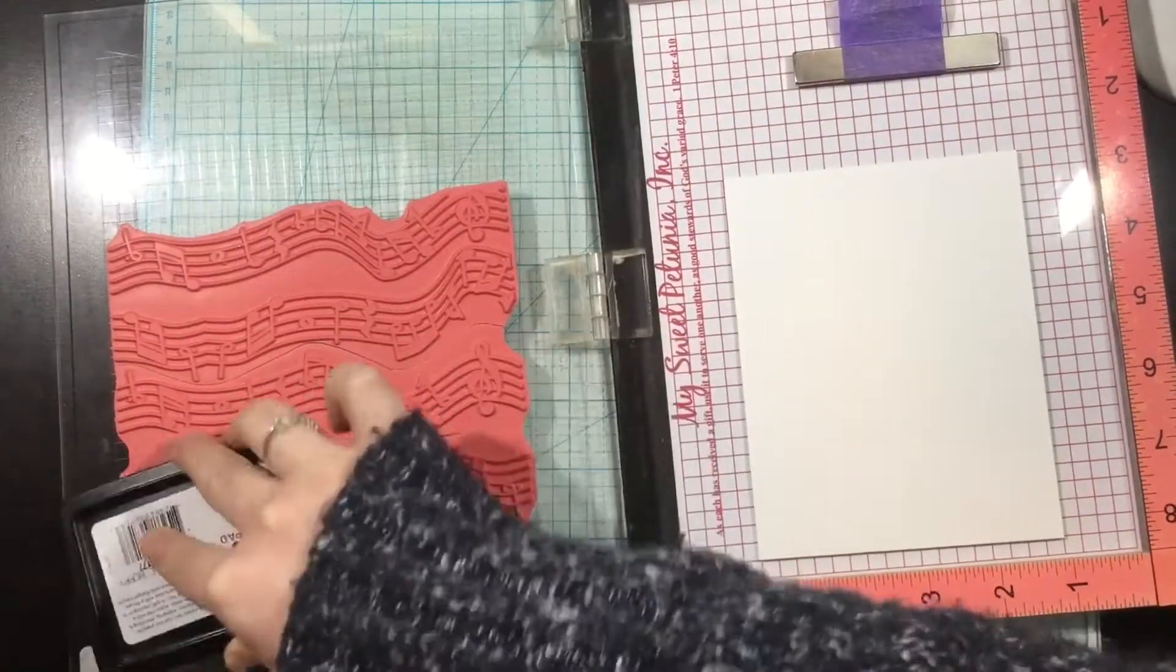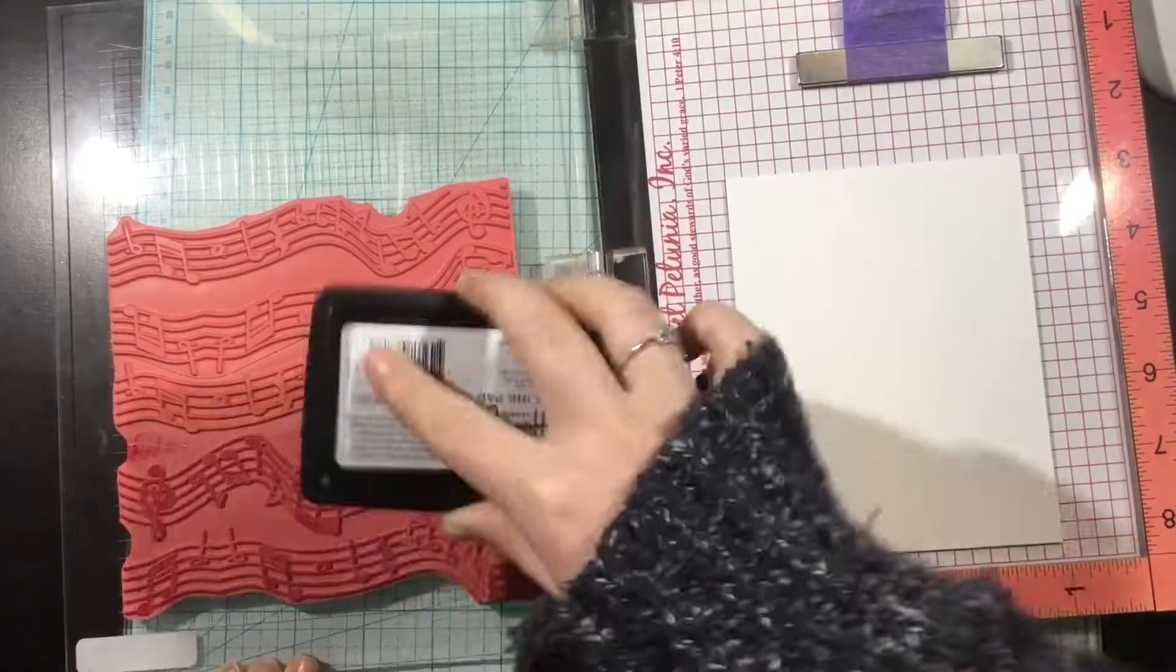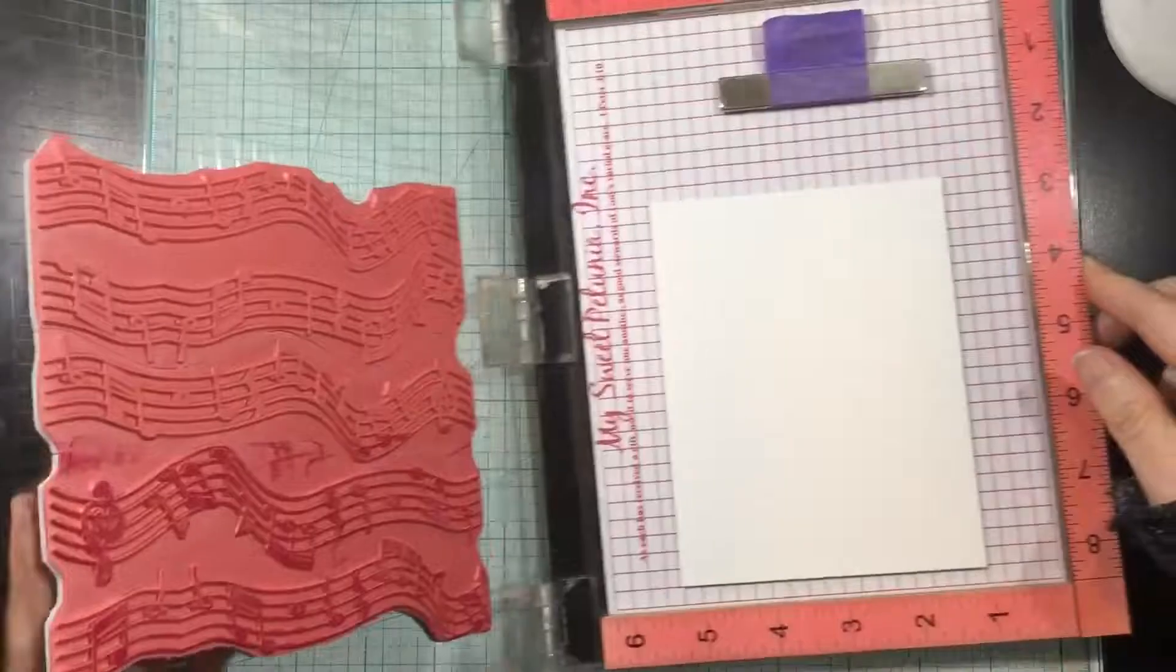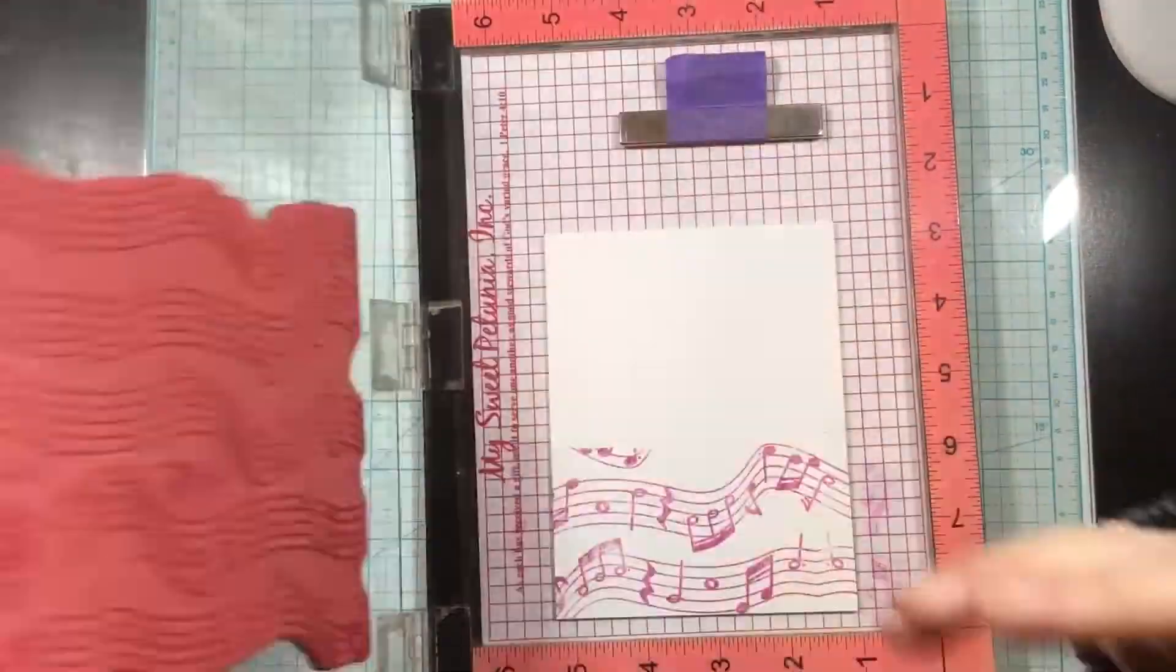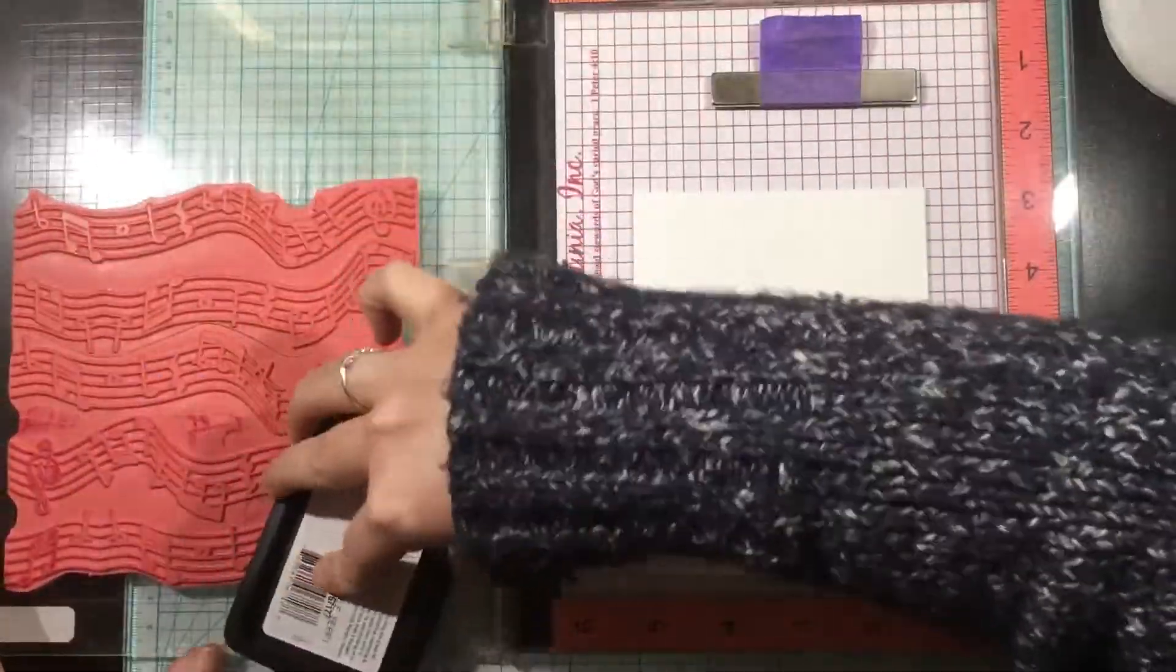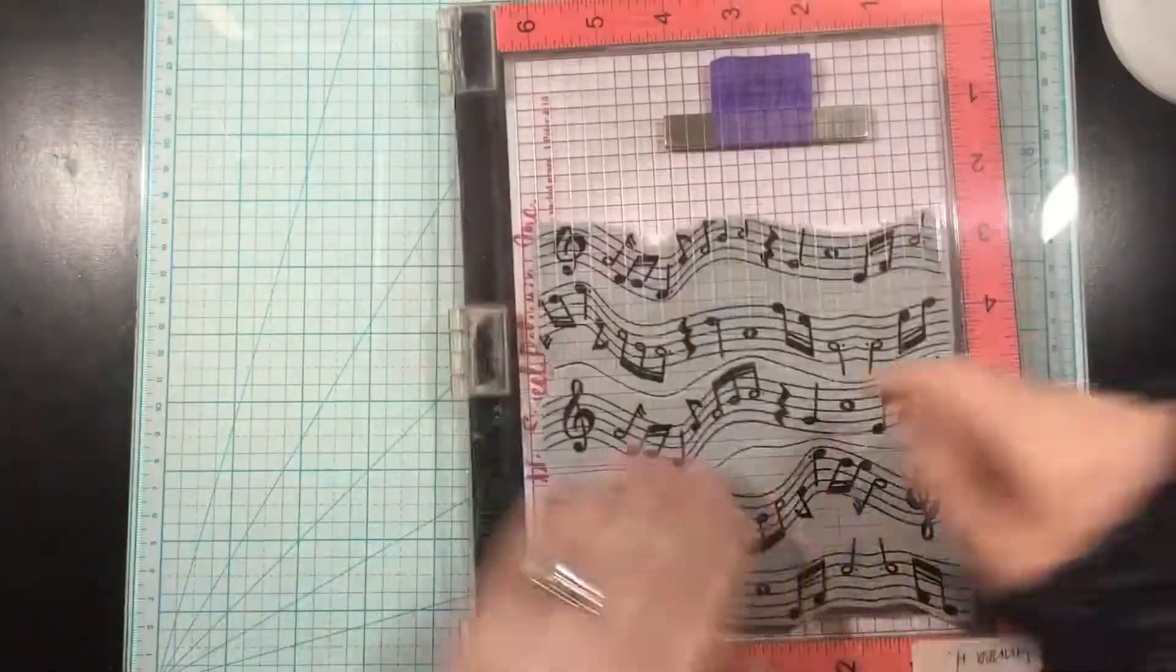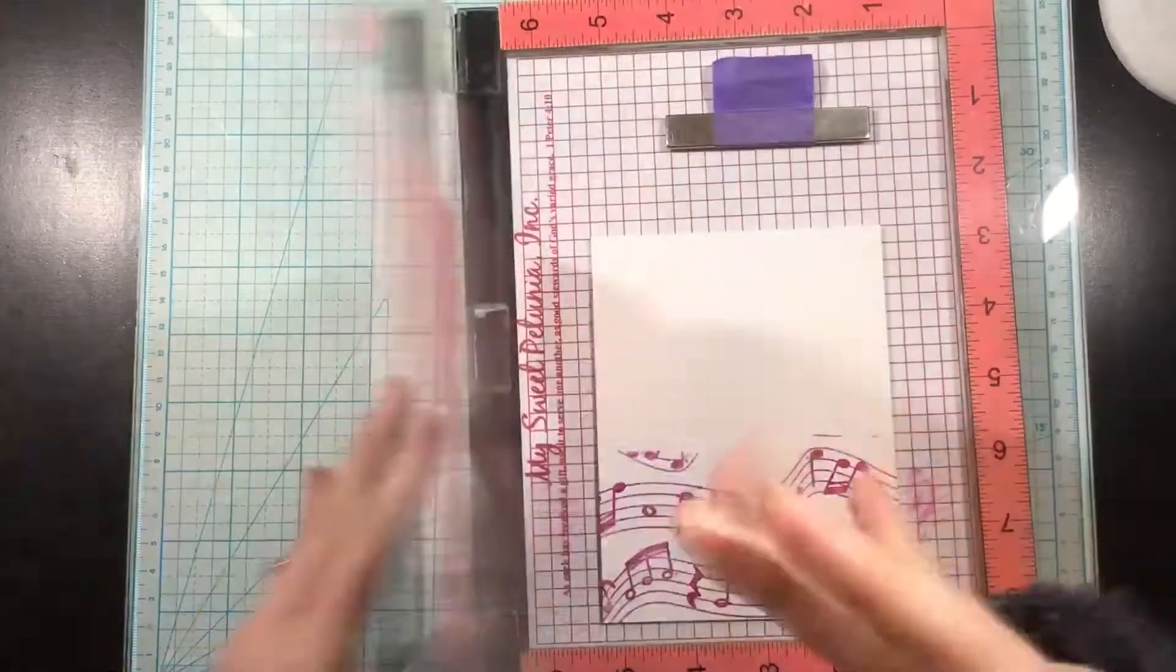Now I'm going to ink up this stamp, and if you noticed, I kind of repositioned my cardstock just a little bit. We're going to be taking this out of the MISTI to do the technique and then putting it back in, so you do want to make sure that you have the cardstock in a place you'll remember where it was.